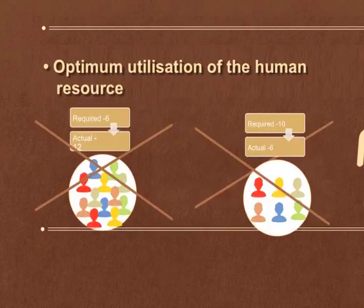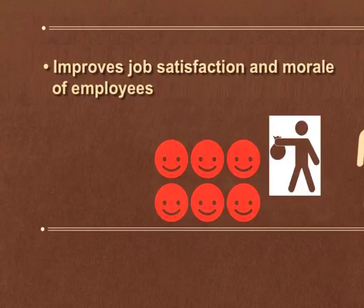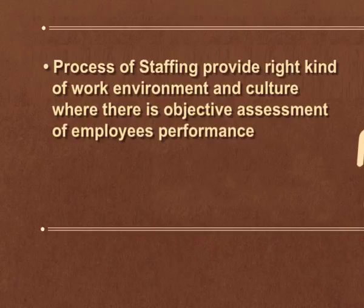Fourth, optimum utilization of human resources: in both overstaffing and understaffing, human resources are not utilized properly. Staffing ensures the organization is neither understaffed nor overstaffed but optimally staffed, so all resources including human resources are optimally utilized. Fifth, improved job satisfaction and morale: the staffing process provides the right kind of work environment where there is objective assessment of employees' performance and employees are fairly rewarded for their contribution, which increases satisfaction and morale.